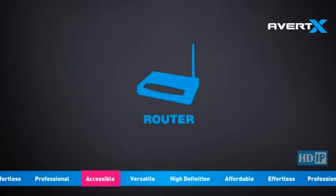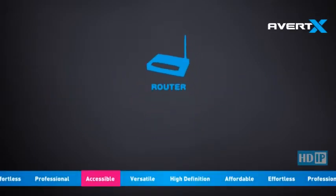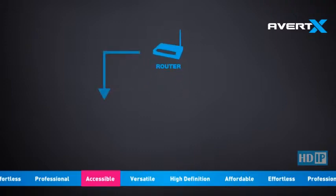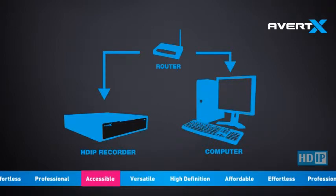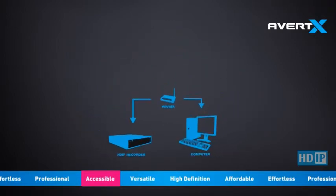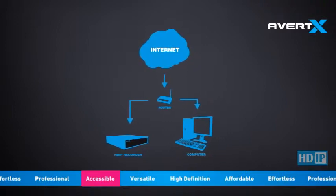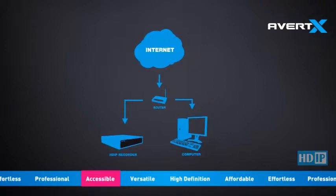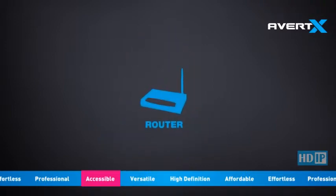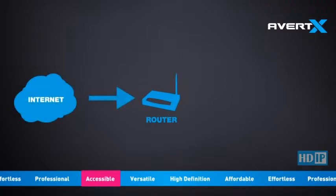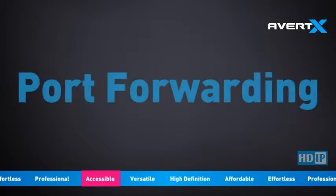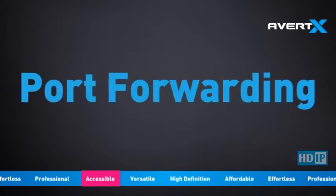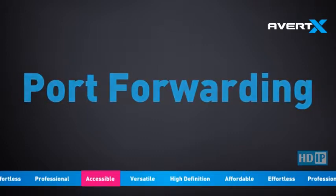Your local network consists of the devices you have connected to your router. This might include your Vertex recorder, your computer, your laptop, and your printer. In order to access your recorder from a location outside of your local network using the internet, you will need to configure your router to forward the information from the internet to your recorder. This video will provide step-by-step instructions for configuring port forwarding on your HDIP recorder.